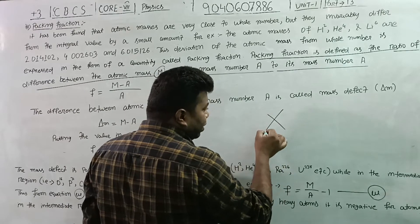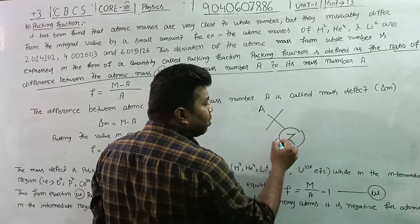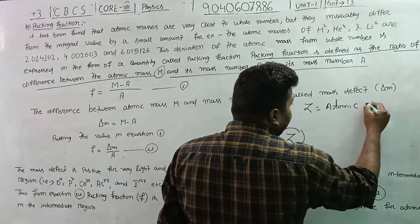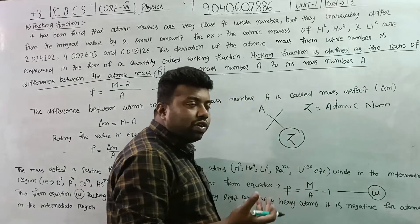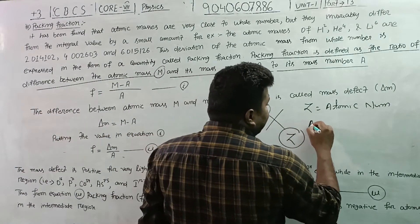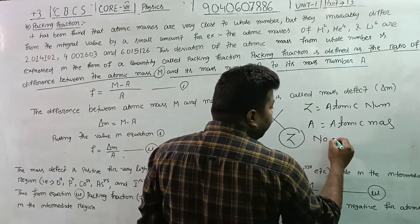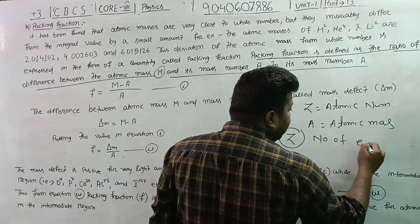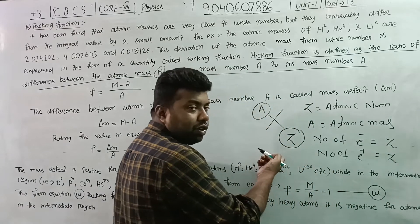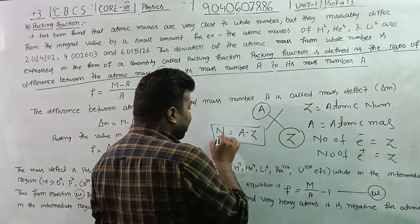We have to replace the element symbol which is Z, and add A. Atomic number Z is the number of protons and electrons. Atomic mass number A includes the number of electrons, protons, and neutrons. A minus Z gives us the number of neutrons.